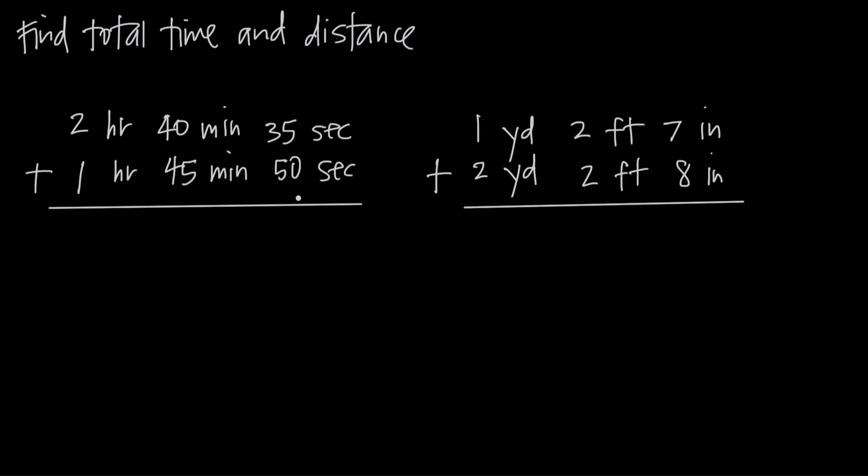We start with seconds: 35 plus 50 is 85. But we know there's only 60 seconds in a minute, so 85 seconds is 1 minute and 25 seconds. We don't want to just say 85 seconds - we want to say 1 minute and 25 seconds.